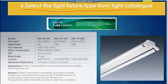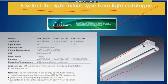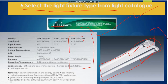We have to select the light fixture type from the light catalogue. For the classroom, here I have selected LED T5 tube lights from the Cisca catalogue book. This is the tube light fixture where we have two light bulbs in one set.